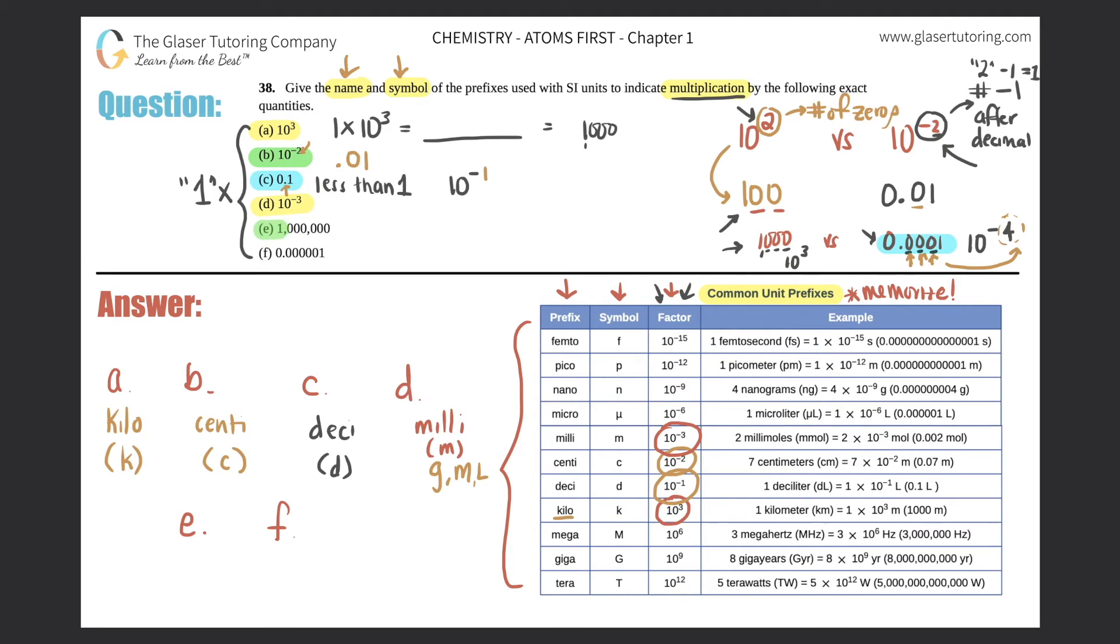Here is the next one. E, 1 million. You got to put that into 10 raised to the, so it's greater than one. So that means that my 10 is going to be raised to a positive number. And remember, positive numbers, whatever the amount of zeros after the decimal, that's going to be the exponent. Those are the easy ones. So let's see. 1, 2, 3, 4, 5, 6. So this is 10 to the sixth. And 10 to the sixth is, if I look over here, here it is. This one is mega and mega is capital M.